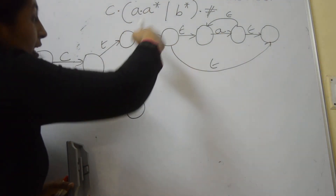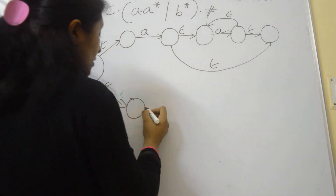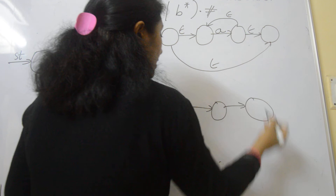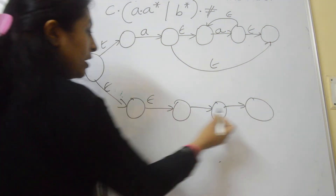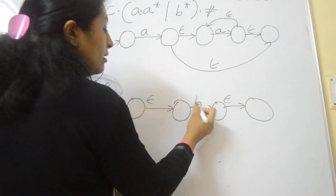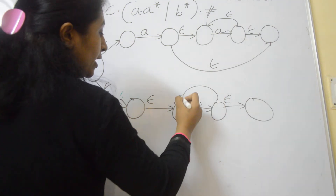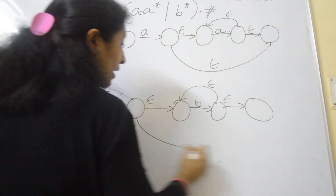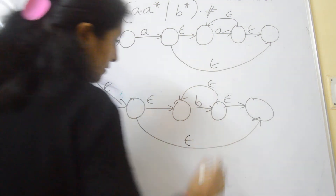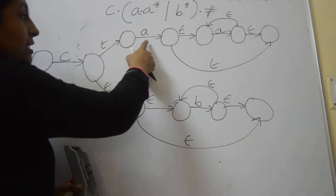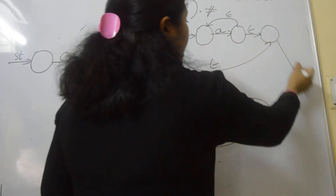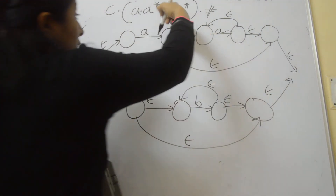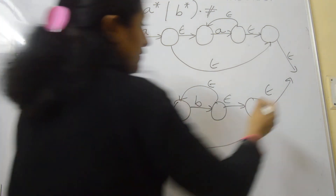Similarly, here we have only B*. Take 4 states again for Kleene closure: null transition, symbol B, null transition, with a null transition from state 2 back to state 1 and another forward. This is B*. This is AA*. At the end, perform the merge of these two for union, as drawn previously.